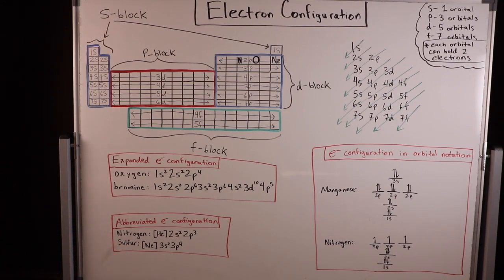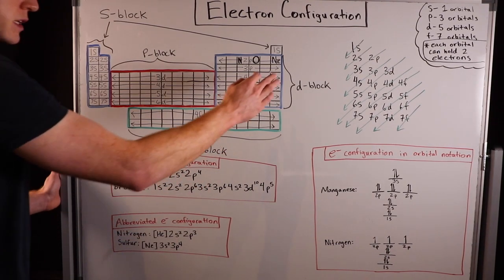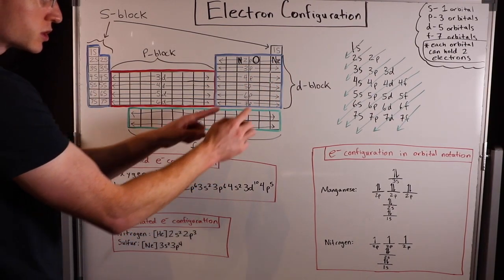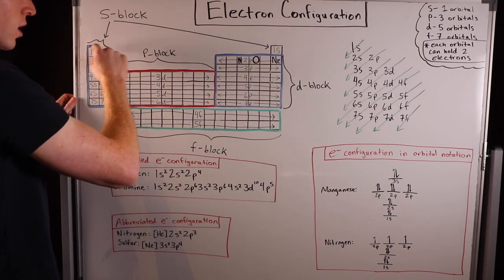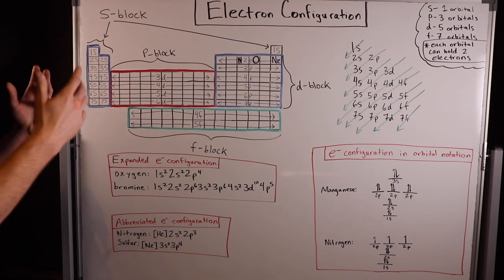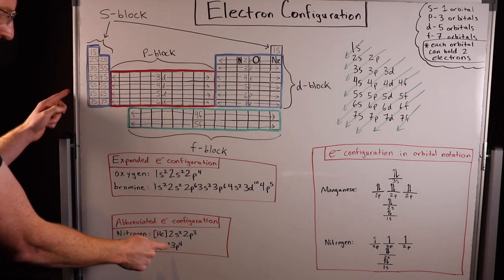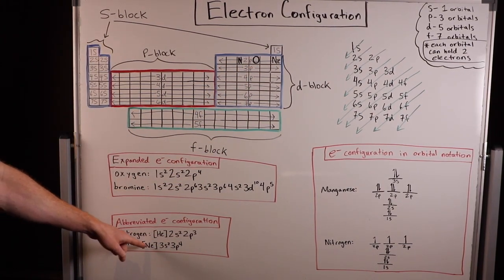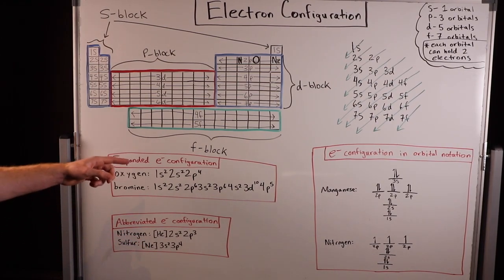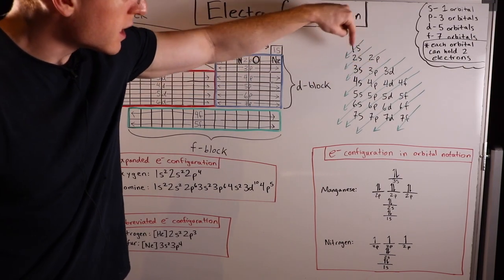Sulfur is further down than nitrogen. We can abbreviate this using a later noble gas, neon. Neon is right here, so when we see bracket neon, that means we're already right here, starting right here. Neon implies 1s2, 2s2, 2p6. So instead of writing 1s2, 2s2, 2p6, we just write neon. Then we go on 3s2, 3p4. So sulfur is right here. I hope you see how you can use noble gases to abbreviate and save space. Notice how we're always following this filling pattern. We cannot skip around. We have to go in this specific order.